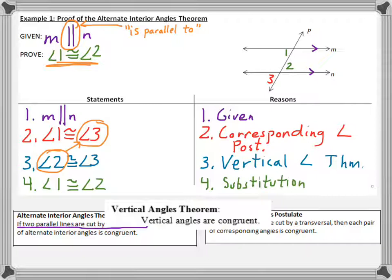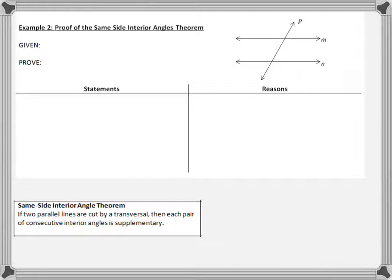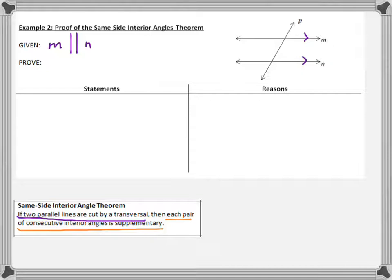Now we can build off of the corresponding angles and alternate interior angles theorems to show some other relationships. Let's prove that same side interior angles are supplementary — that's the same side interior angle theorem. If two parallel lines are cut by a transversal, then each pair of consecutive interior angles is supplementary. The given information is that M is parallel to N. I can pick out angle one and angle two, and the result of the proof will be showing that angle one and angle two are supplementary.